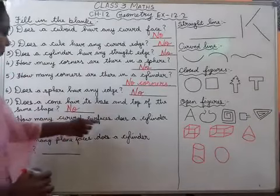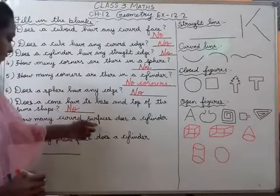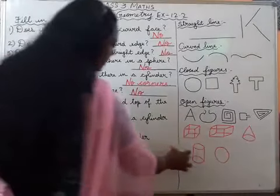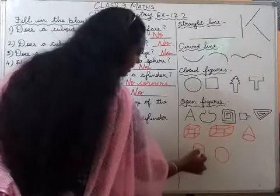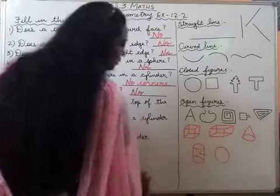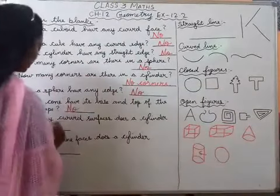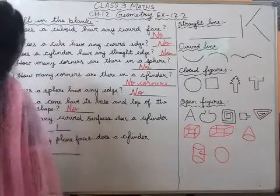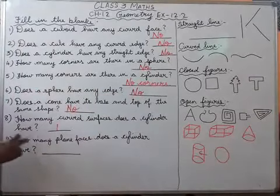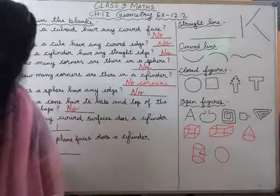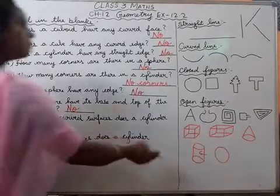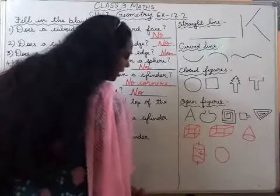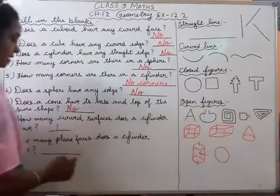How many curved surfaces does a cylinder have? Cylinder mein kitni curved face hai? This is the curved face — only one curved face is there. So the answer is one. How many flat faces does a cylinder have? Cylinder mein kitni flat faces hoti hai? Flat faces do hai. So the answer is two.